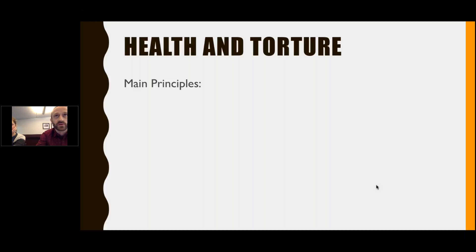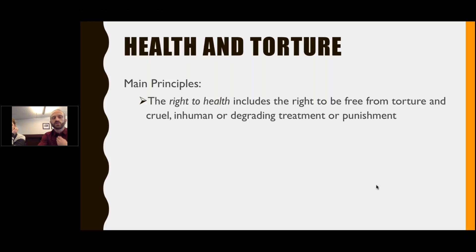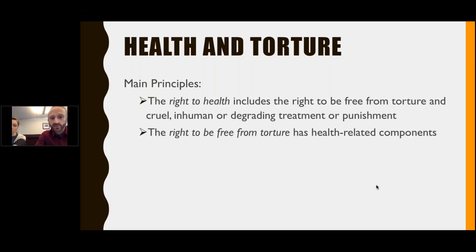What are the main principles that operate with regard to health as situated in the context of torture? There are two primary ways to look at this. The first is through the right to health — an international right also found in about 135 constitutions — which includes the right to be free from torture and cruel, inhumane, or degrading treatment. The right to be free from torture, a separate human right, also has health-related components.